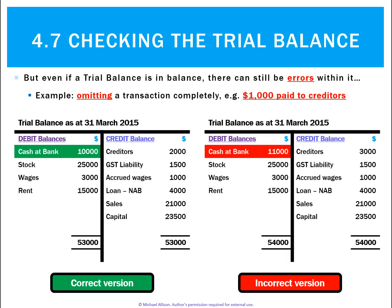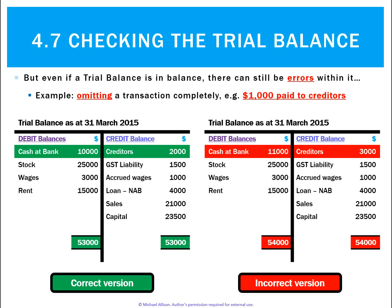Why? You forgot to record $1,000 that you paid to creditors. Creditors should be $2,000, but you've got them listed at $3,000 because you forgot to record the extra $1,000 that you paid. Looking at the balances, the incorrect one will be $54,000, but it will still balance — which makes it tough to figure out where the mistake is.